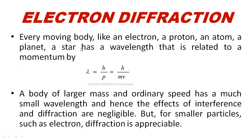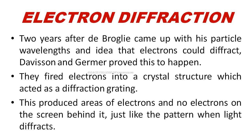Taking a moving body — whether it is an electron, proton, a planet, or a star — for all of them the wavelength is Lambda equals h by p, or h by mp. If the mass is larger and speed is ordinary, the wavelength is very small, and their interference and diffraction effects are negligible and can be neglected.